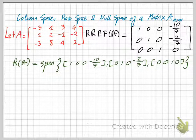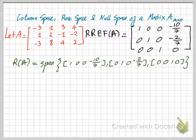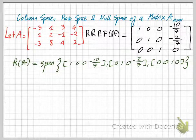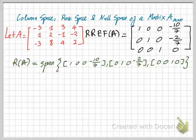Since there are three non-zero row vectors, these three vectors form a basis for the row space of A. Then we can look at this reduced row echelon form of A to identify the independent column vectors of A. We see that the first, second, and third column vectors are independent column vectors of A.